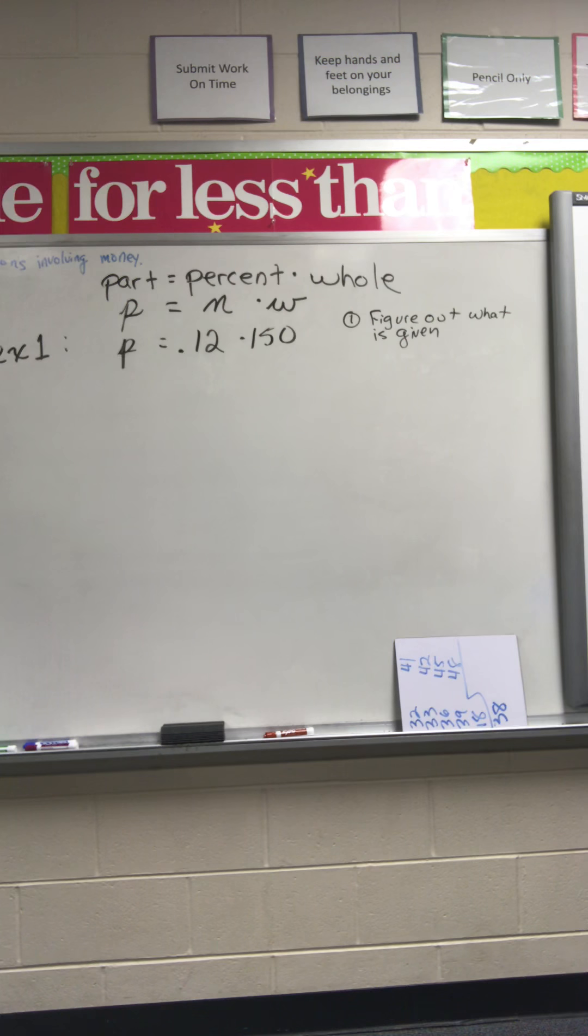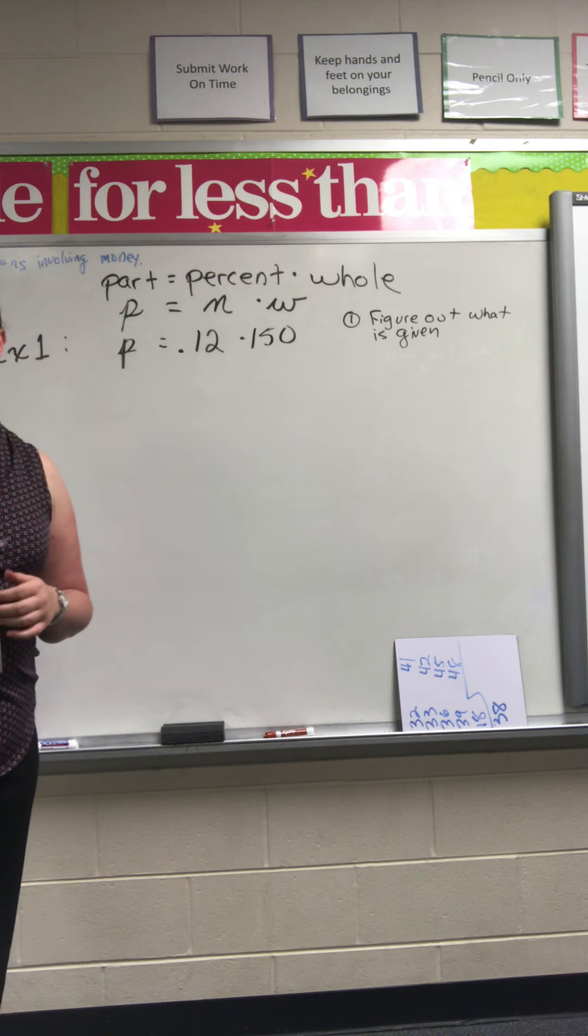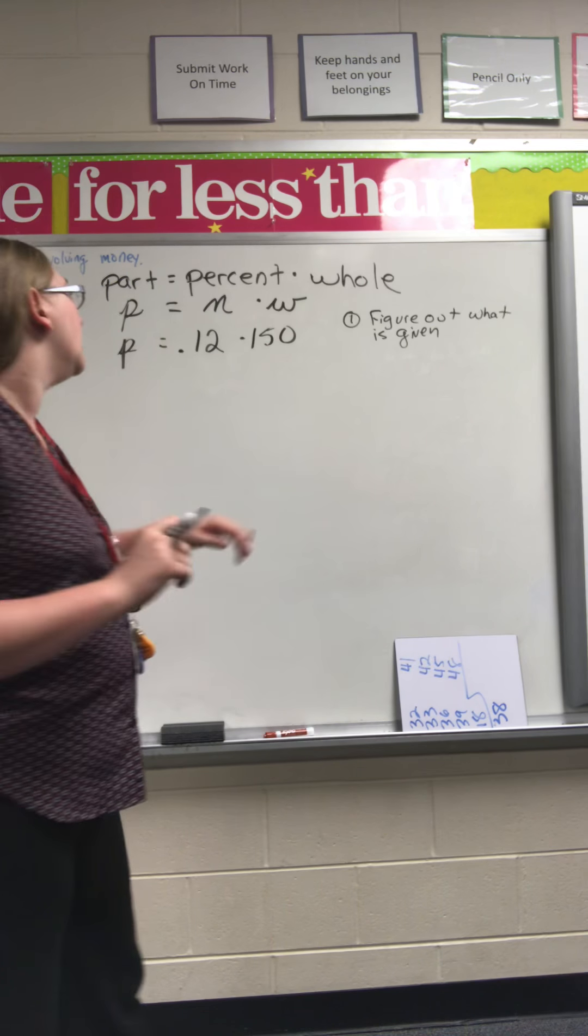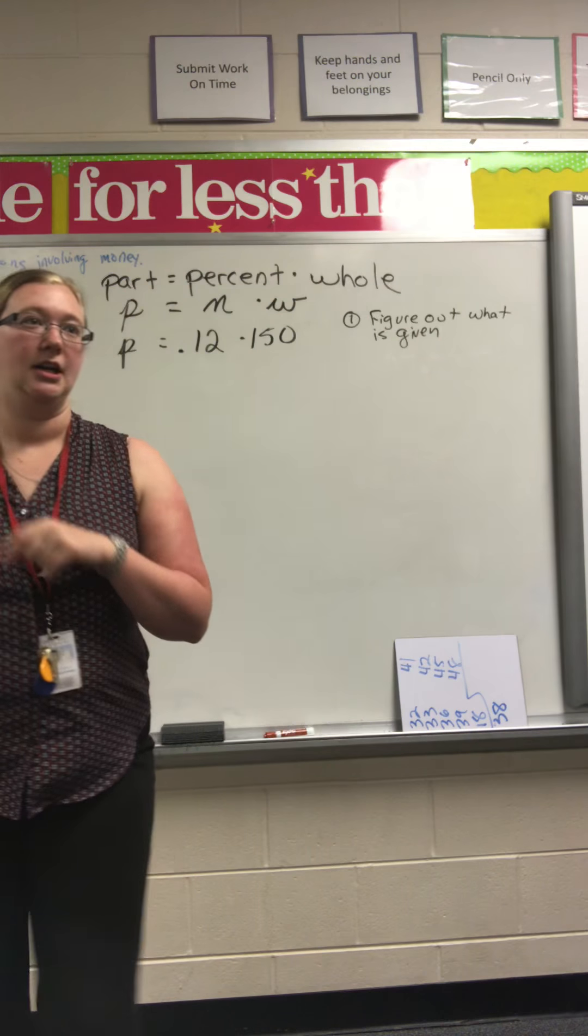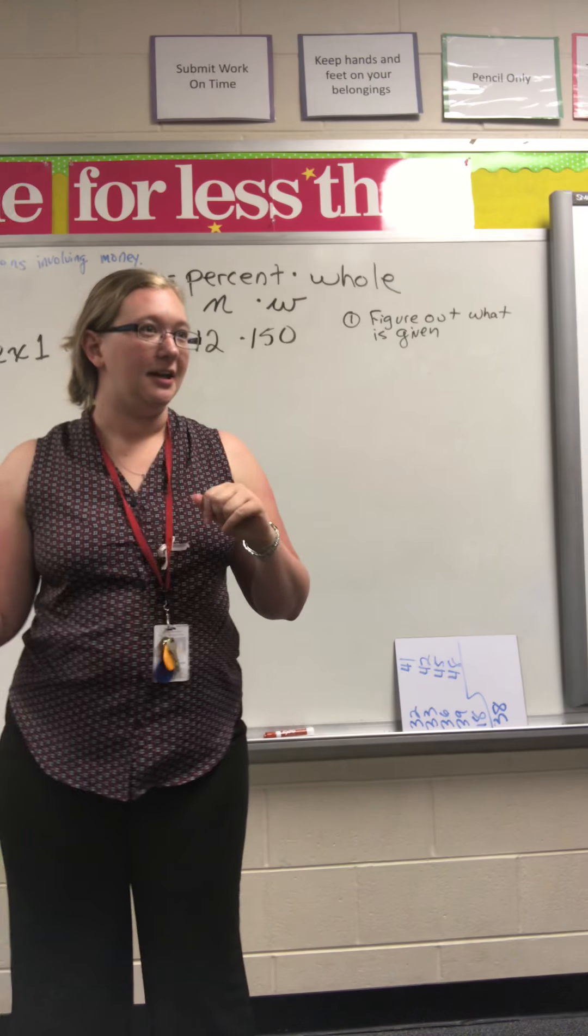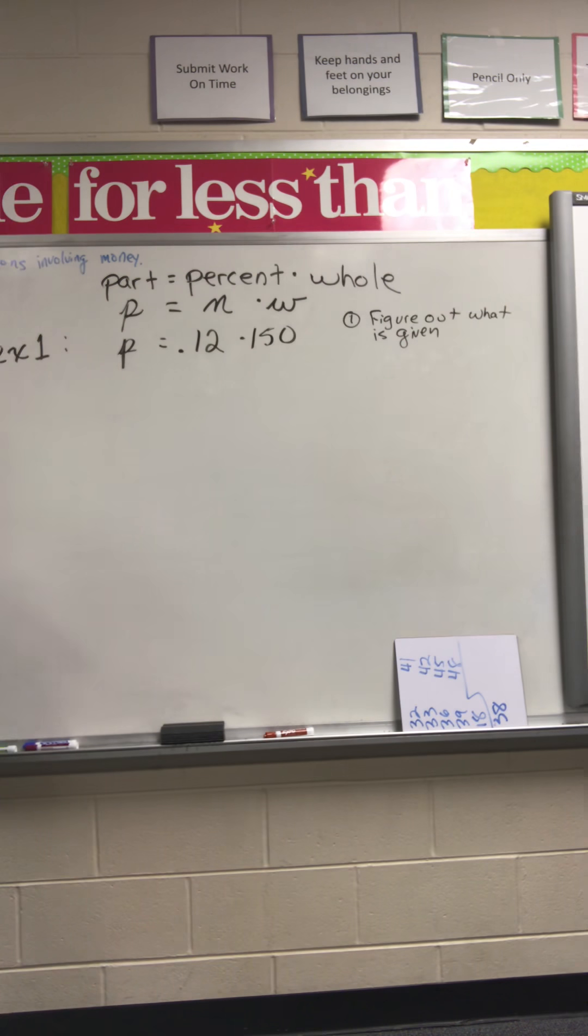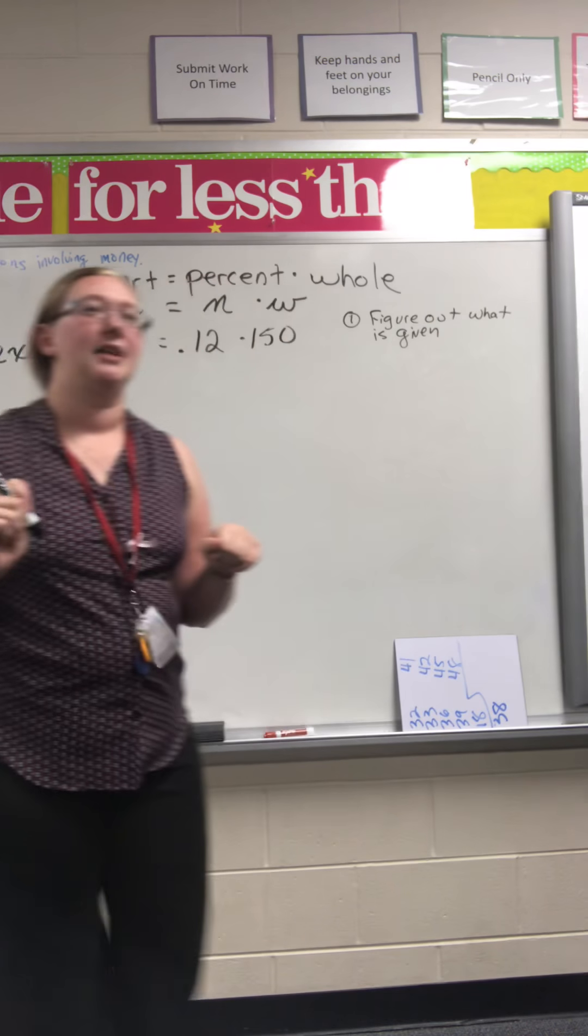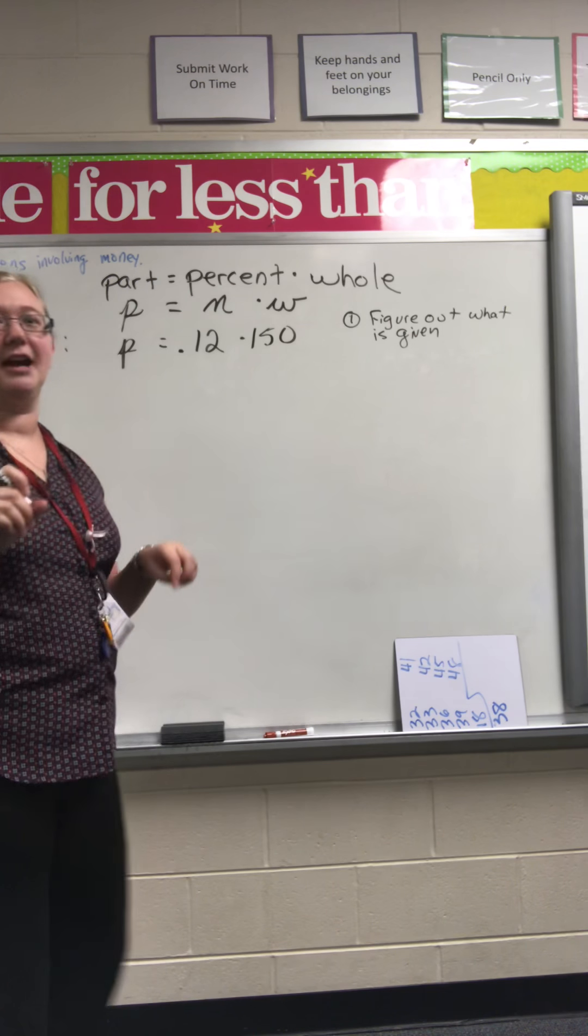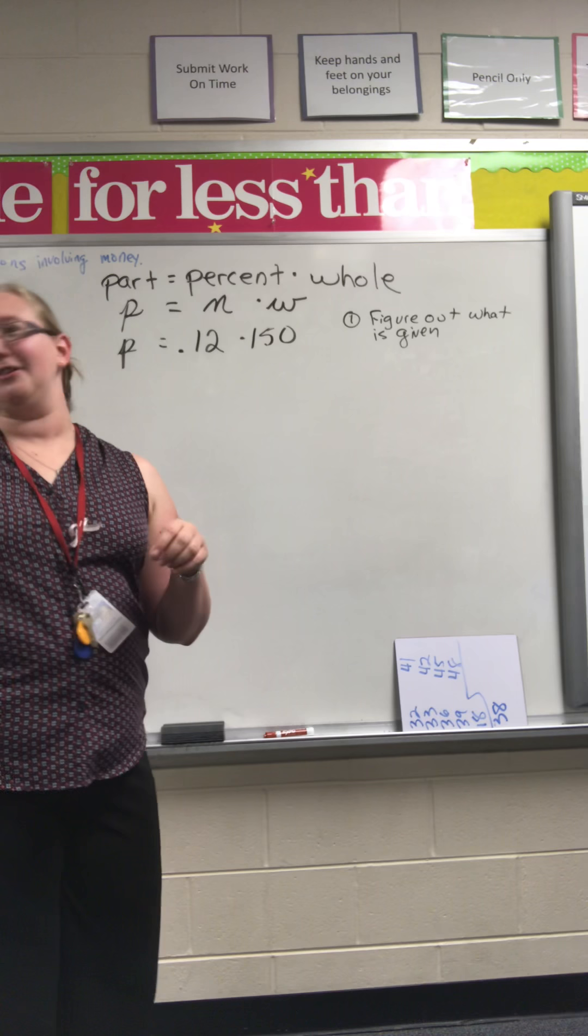How did you get 0.12 from 12%? Very good. So to go from a percent to a decimal, we move two places to the left. If we were going to convert from a decimal to a percent, then we move to the right, to the right. But we're not going to cross-cross. We do that with proportions. We don't do that in equations.